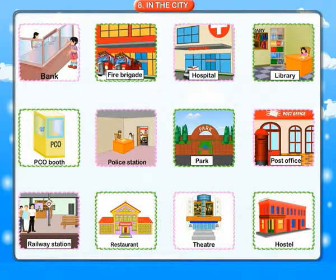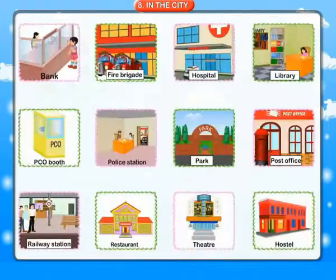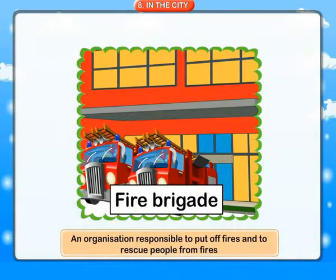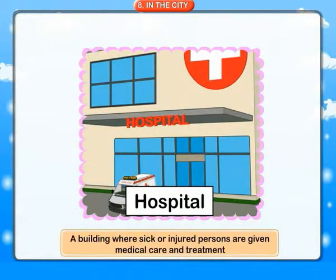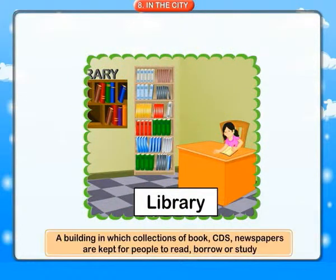In the city. Bank: an organization that provides various financial services. Fire brigade: an organization responsible for putting out fires and rescuing people from fires. Hospital: a building where sick or injured persons are given medical care and treatment. Library: a building in which a collection of books, CDs and newspapers are kept for people to read, borrow or study.